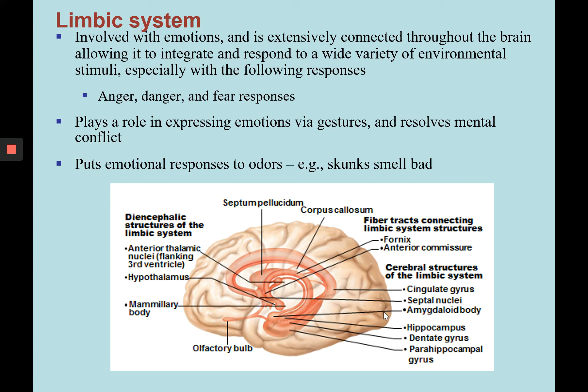The limbic system is involved in emotion — probably the most important keyword to associate with it — but it's also extensively connected to other parts of the brain. It integrates and responds to a wide variety of environmental stimuli, especially anger, danger, or fear responses, working well with the sympathetic nervous system. It expresses emotions via gestures and resolves mental conflict by working with motor and sensory areas. It also links to olfaction, putting emotional responses to odors — for example, if you think something smells bad or good.